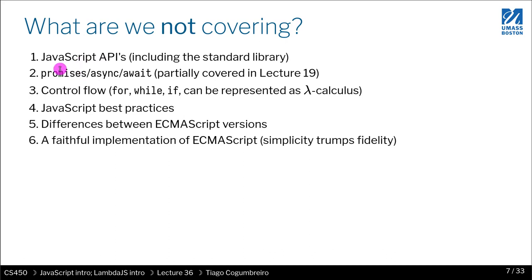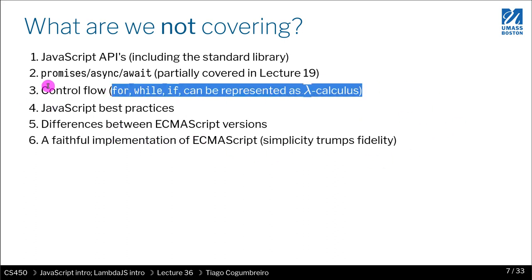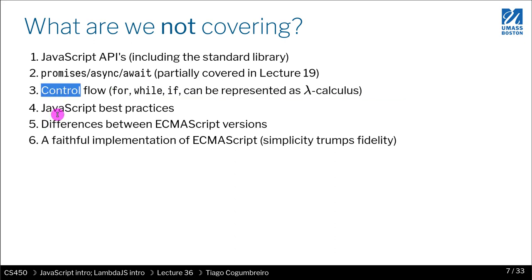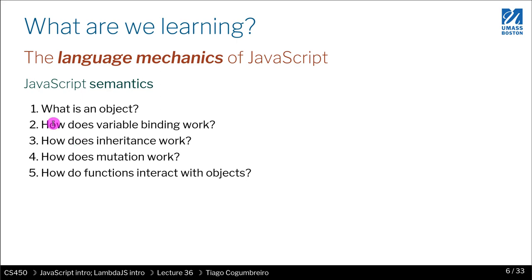So what are we not covering? We're not covering the APIs — for instance, we're not covering the DOM, no promises, no async, no awaits, although these are very popular in JavaScript. We're not going to be talking about control flow, how to implement a loop or anything like that. We're not going to be covering exceptions, JavaScript best practices, or the differences between the various versions of JavaScript. We are not really interested in a fully faithful implementation of ECMAScript — we're doing a simplistic version of JavaScript that still captures what is covered in these slides.